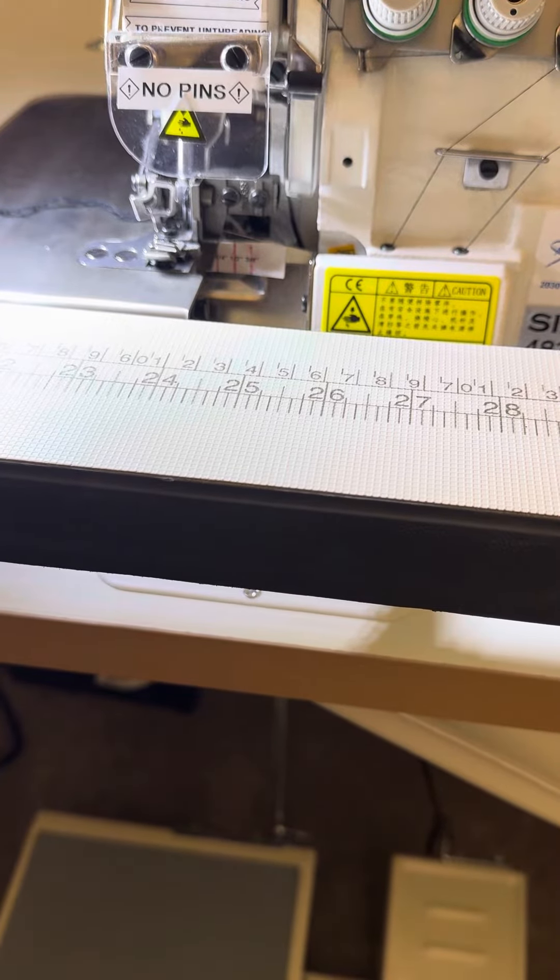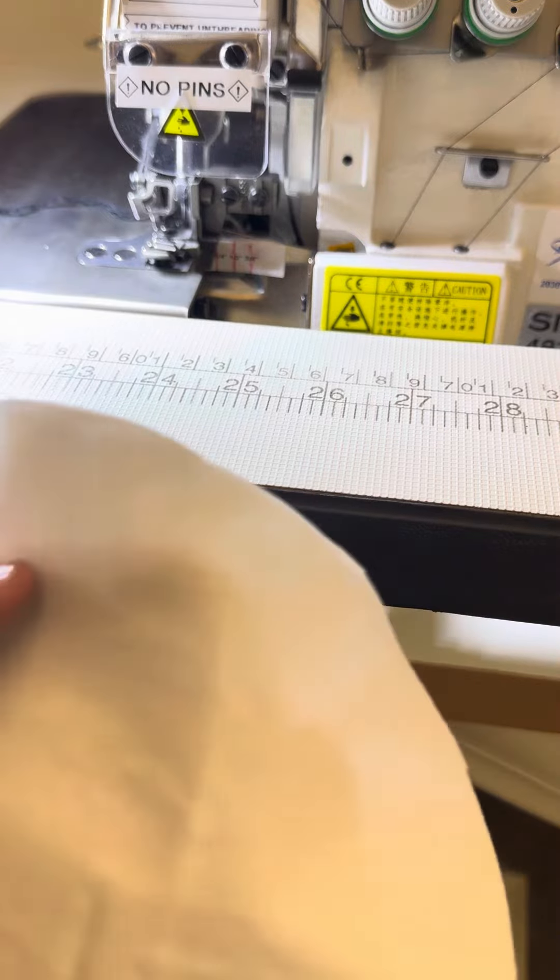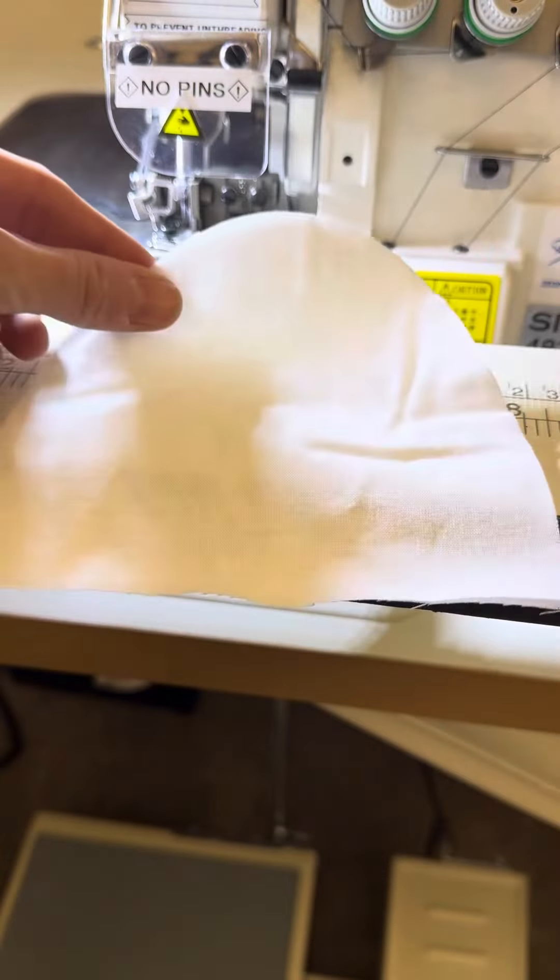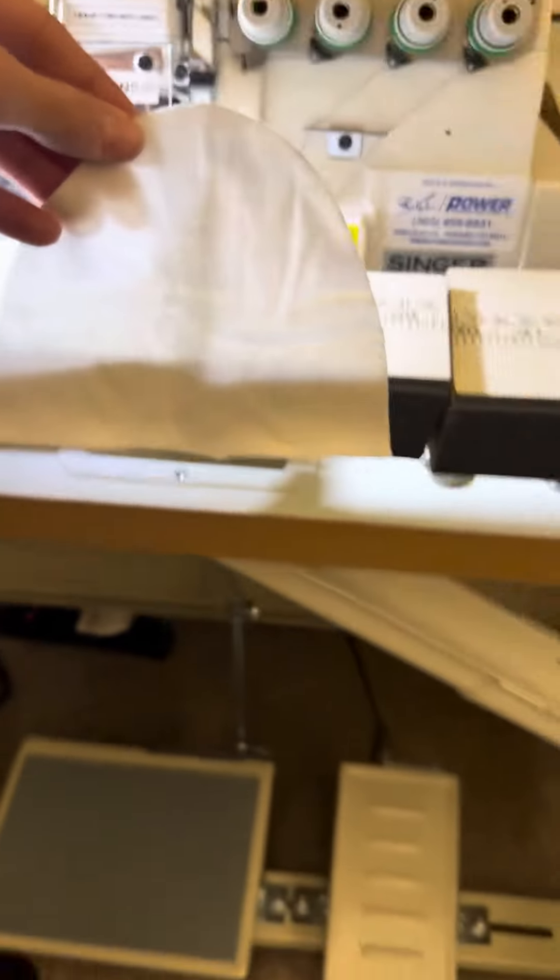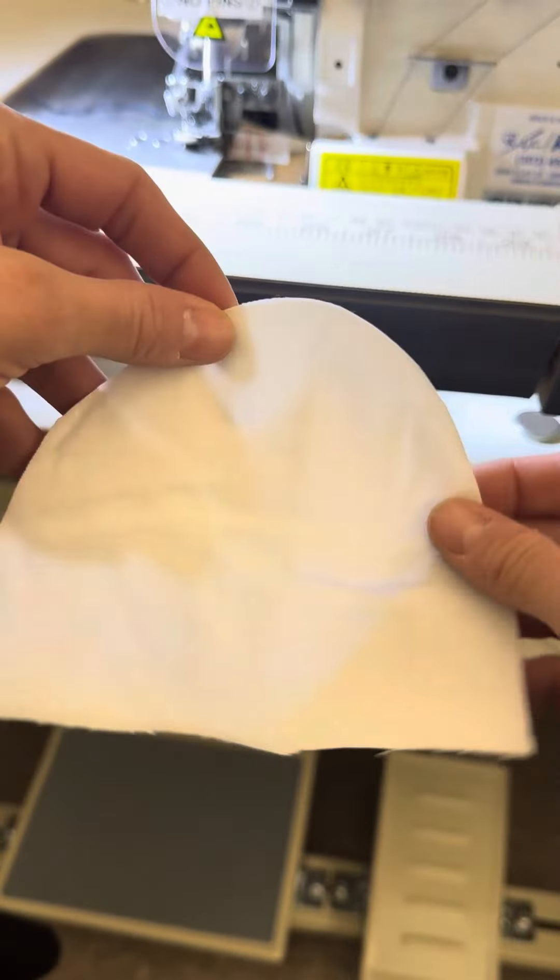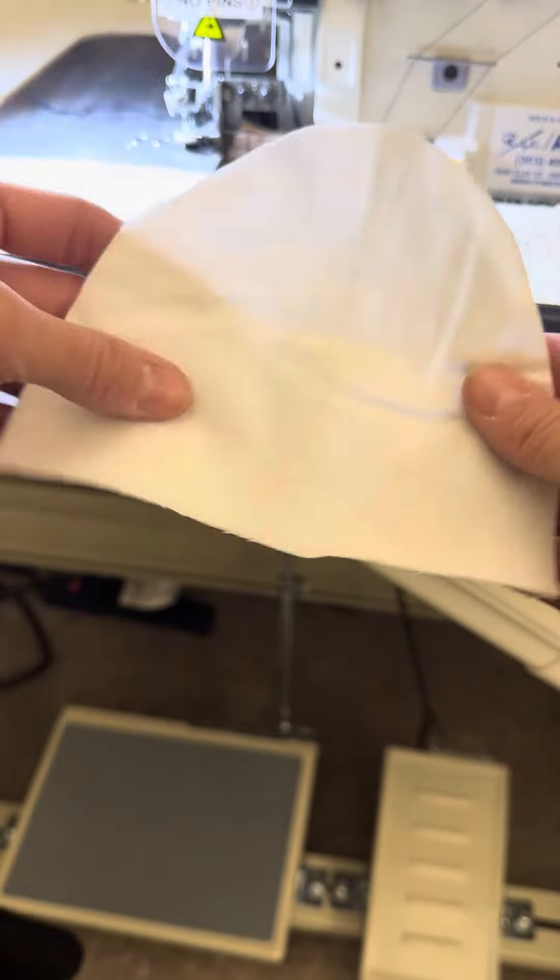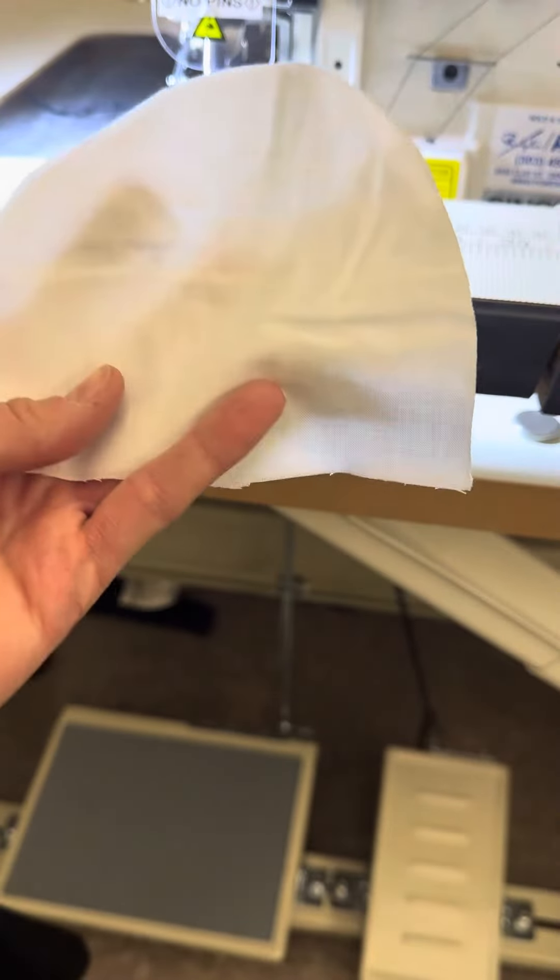All right, for sample number two I'm going to do a curved edge serged edge. What I've done is cut a half circle out of a square of fabric. The bigger this is, the easier it will be when you start sewing. What I'm going to be serging is this curved edge.